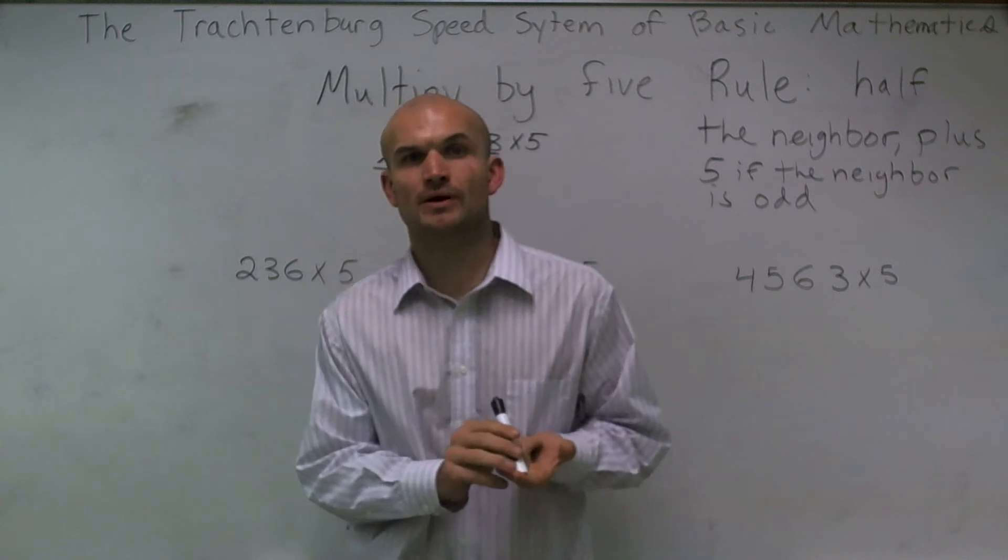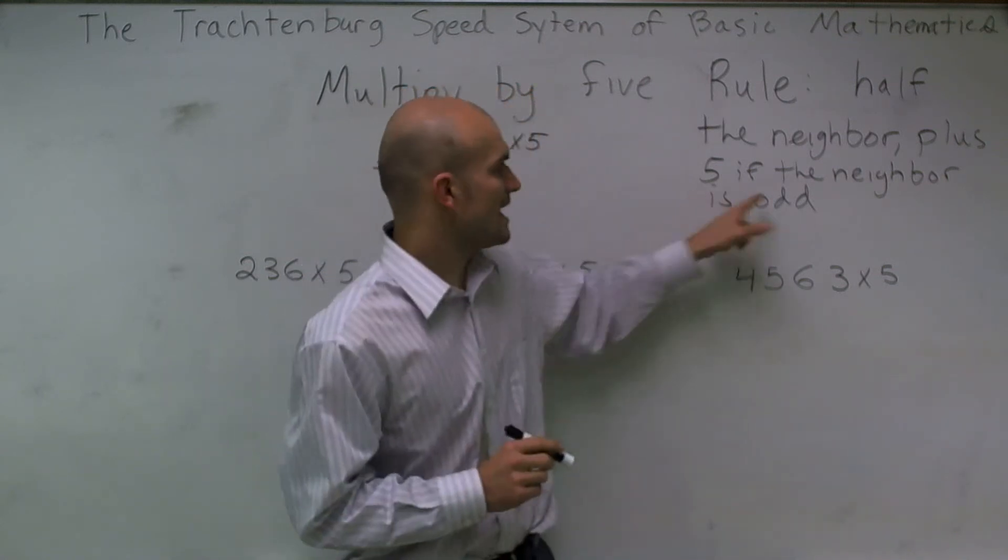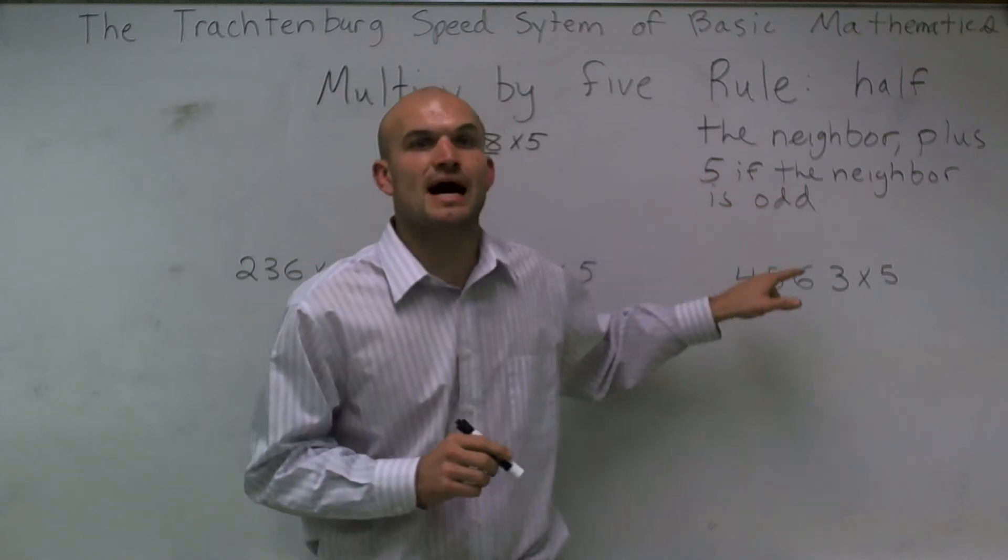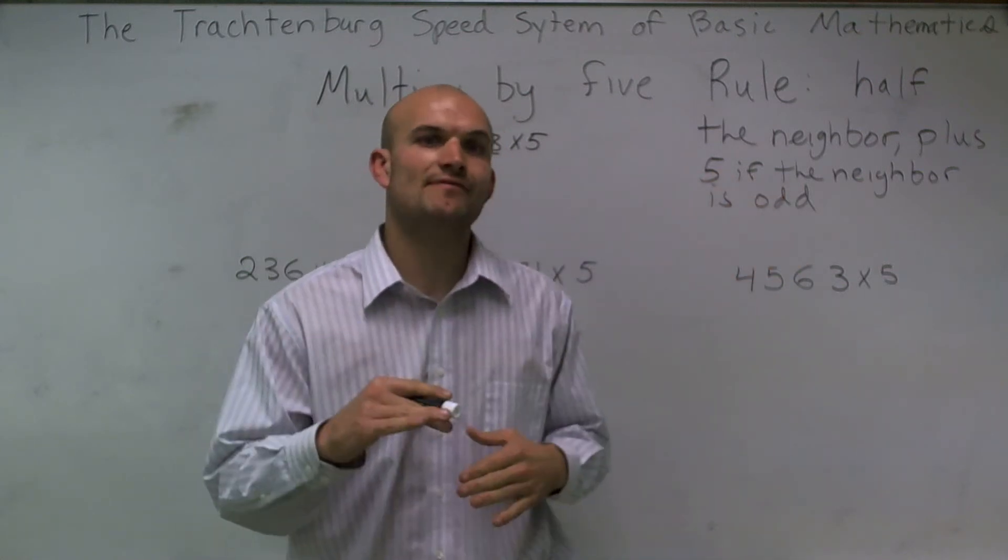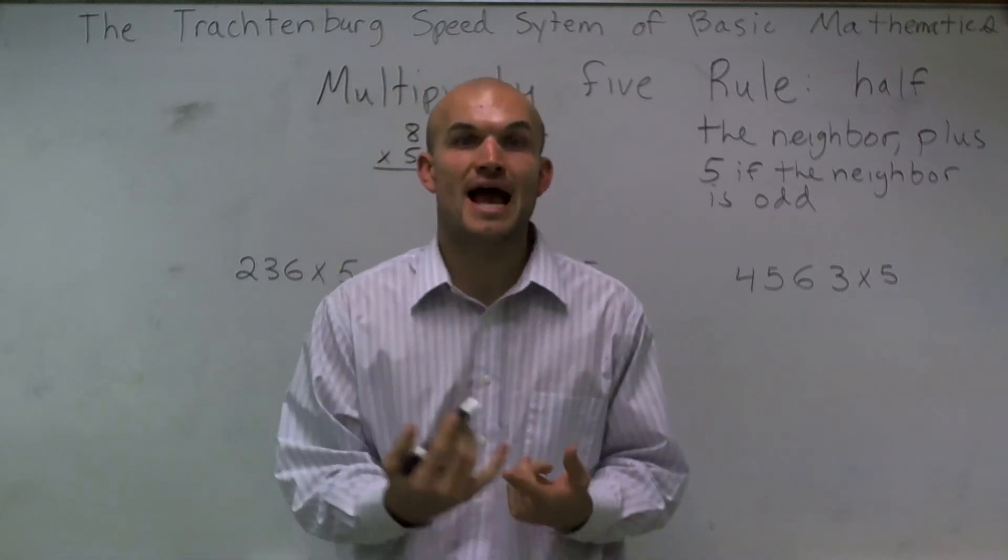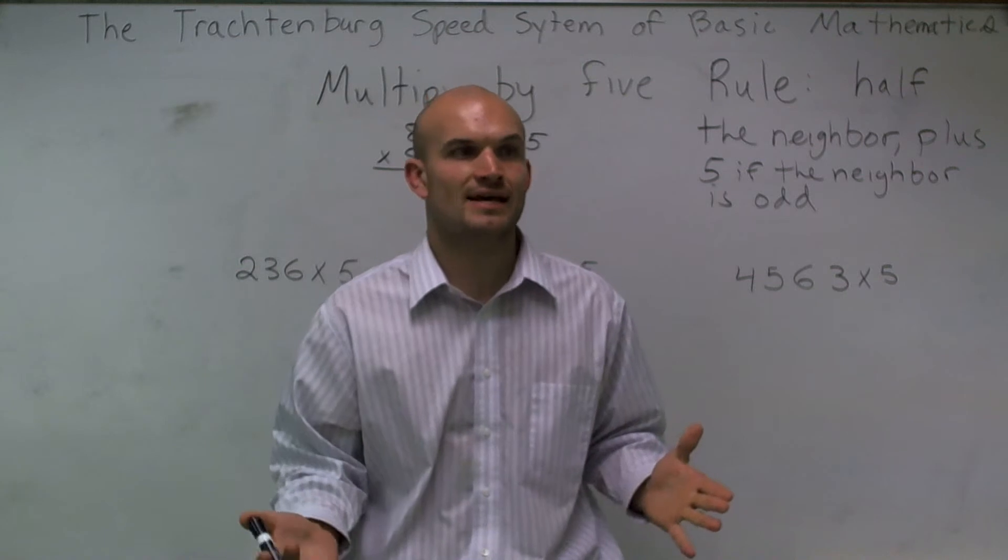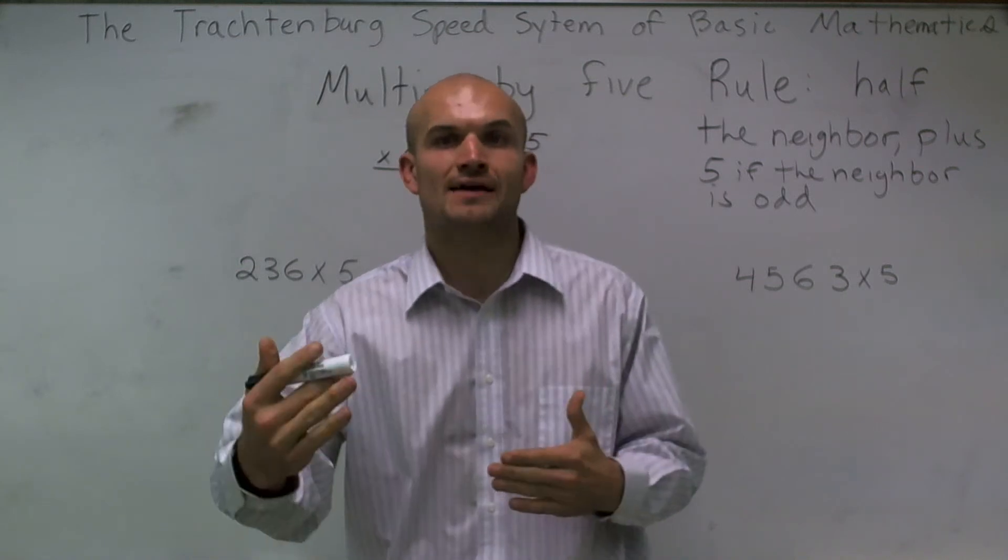So the rule of multiplying by 5 is you're going to take half the neighbor plus 5 if the neighbor is odd. A couple things we want to remember about our neighbors and dividing by half. We are going to add 5 when the neighbor is odd. Because remember, when we take half of a number, and especially like a number that's odd, if we take half of 5, that's 2.5. Well, to alleviate having a decimal, we're going to add 5 to it.